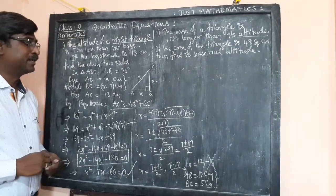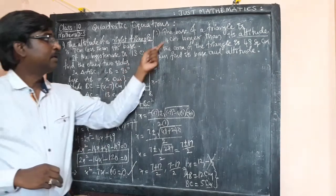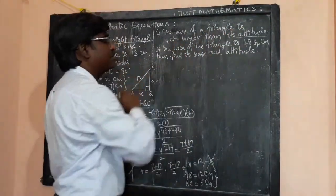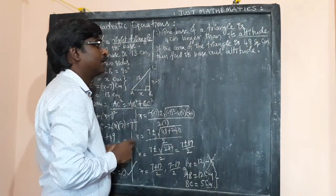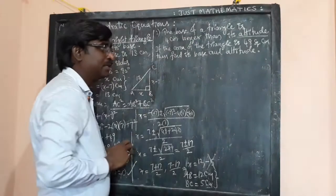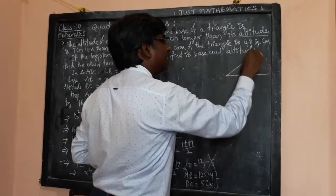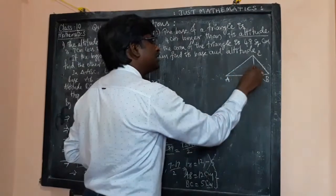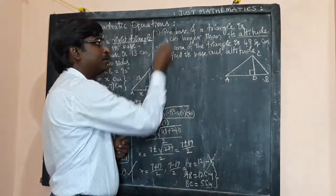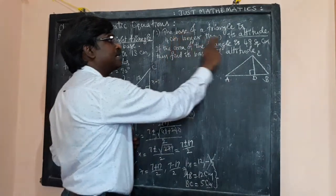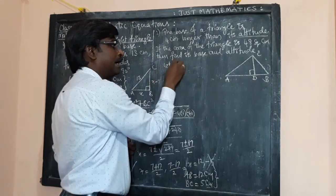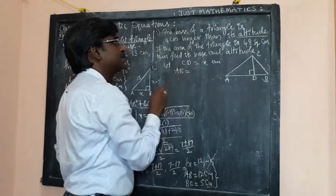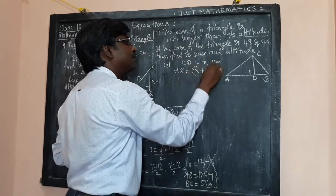Now here is another application — another question. The base of a triangle is 4 centimeters longer than its altitude, and the area is given. This triangle is not a right-angle triangle. So let triangle ABC have altitude CD. Let the altitude CD be x centimeters; then the base AB is x plus 4 centimeters.